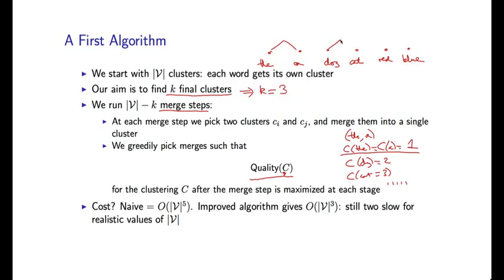Say, for the sake of argument, we choose to merge these two. And then in the next step, maybe I find these two words are merged. And I keep doing this until I end up with my target number of clusters. Say we have k equals three clusters in this case. So that's a kind of heuristic, greedy method, where at each step, I pick the merge step that maximizes this measure of quality.